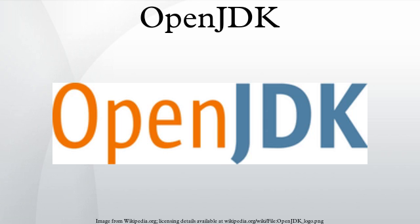On November 5, 2007, Red Hat signed both the Sun Contributor Agreement and the OpenJDK Community TCK license. One of the first benefits of this agreement is tighter alignment with the IcedTea project, which brings together Fedora, the Linux distribution, and JBoss, the application server, technologies in a Linux environment. IcedTea provided free software alternatives for the few remaining proprietary sections in the OpenJDK project.